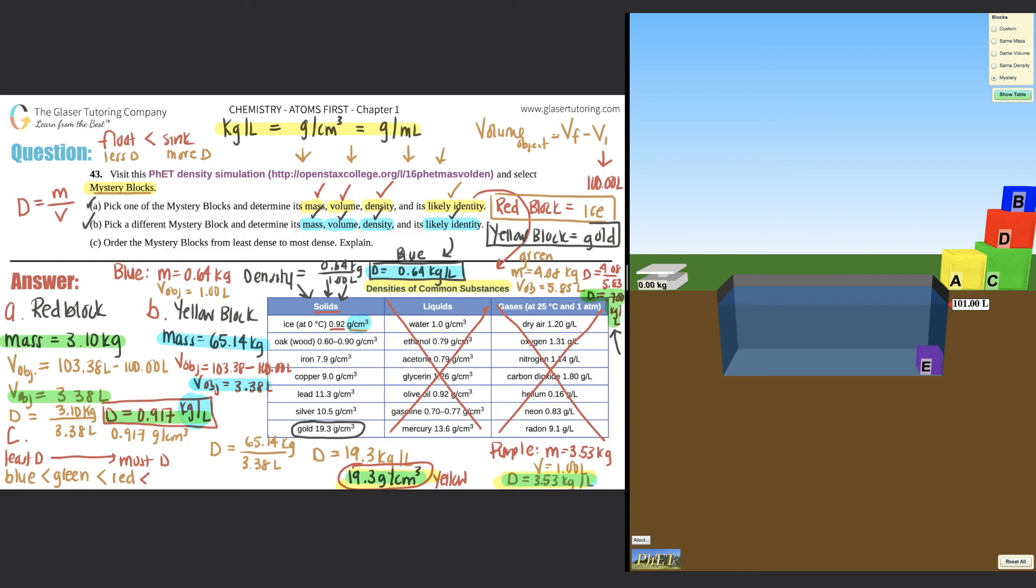And then finally comes yellow. And I think that is the answer to C. Order the mystery blocks from least dense to most dense. And then they say, explain. So you could say that the less dense float and float more towards the surface, the more dense will sink to the bottom. But all it had to do was you just had to compare the densities. So you had to actually calculate the densities, find them, and then put them in order. So from least dense to most dense was blue block, to green, to red, to purple, then finally to yellow.